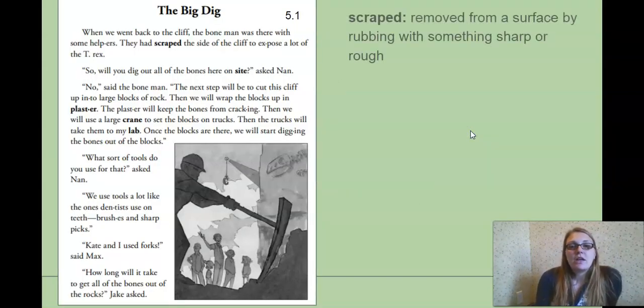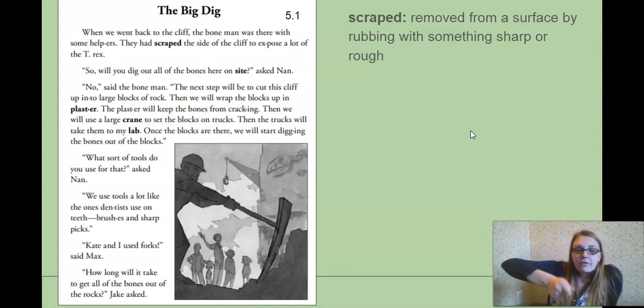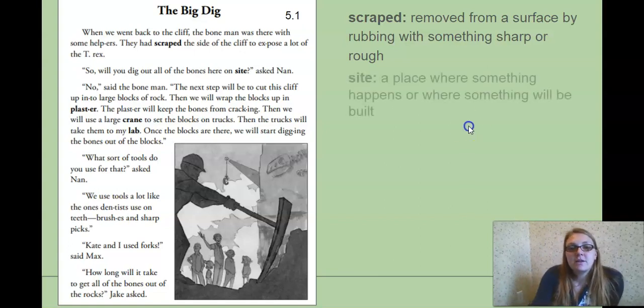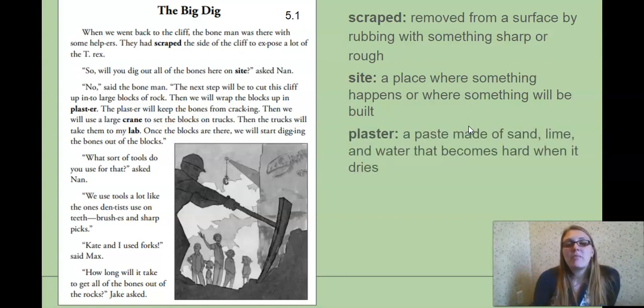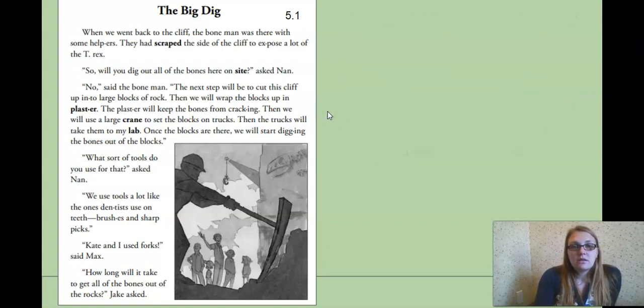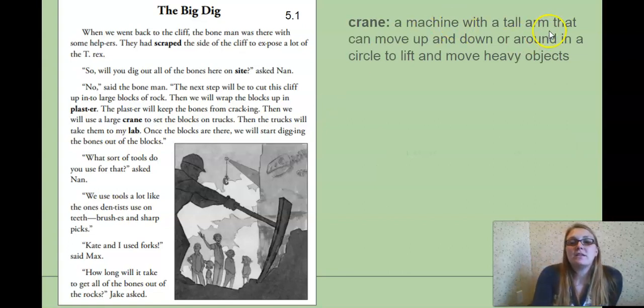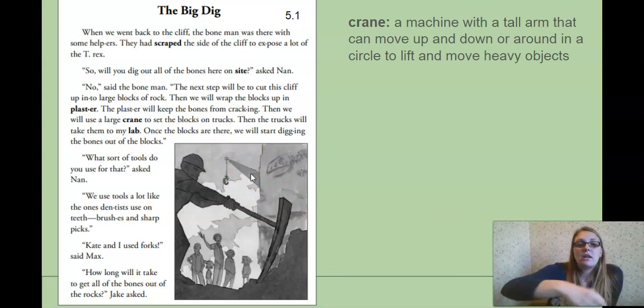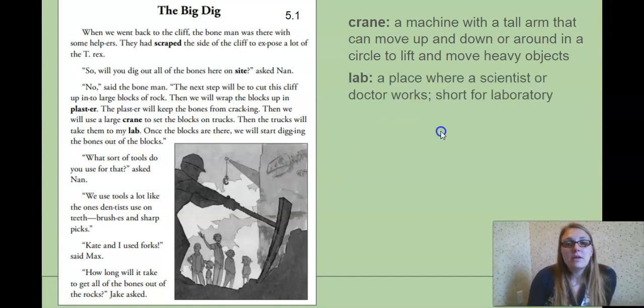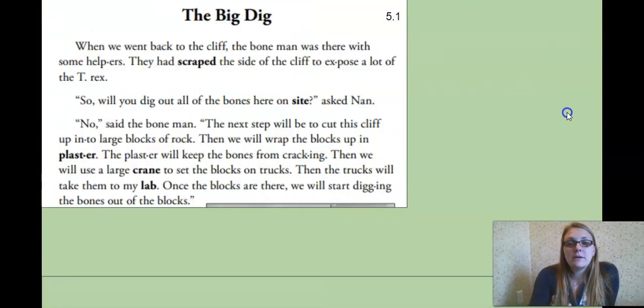Okay, our vocabulary. Scrape, which means to be removed from a surface by rubbing with something sharp or rough. So you might scrape a sticker off of something or might scrape the wall. A site, a place where something happens or where something will be built. So the bones, they're on the dig site. Plaster, a paste made of sand, lime, and water that becomes hard when it dries. And a crane, a machine that has a tall arm that can move up and down or around in a circle to lift and move heavy objects. In the picture, you can see the crane. This arm can go up and down, can kind of move around, and it can help them move heavy objects. A lab is a place where a scientist or a doctor works, short for laboratory.